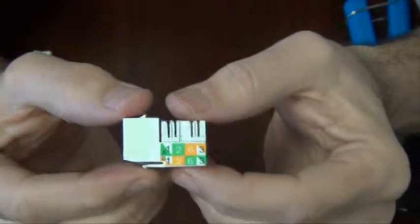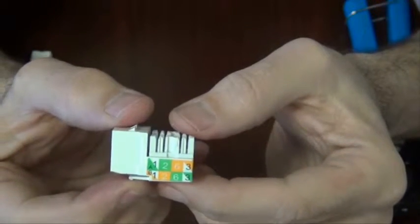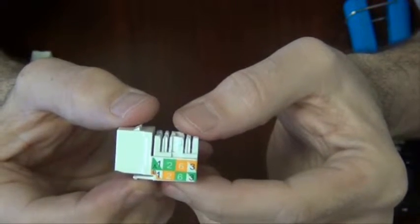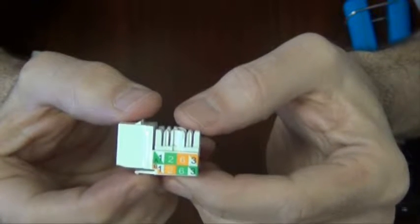On the other side you have two strips of colors. This is where the green and green and white, and orange and orange and white wires go.